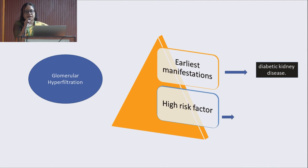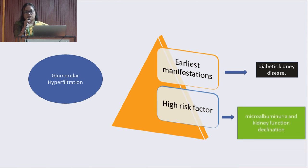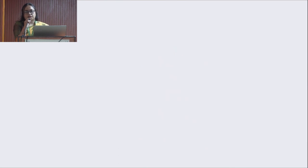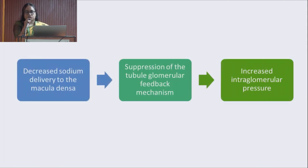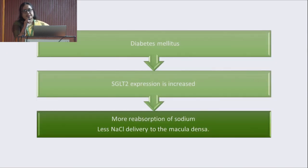SGLT2 inhibitors are now a novel drug and have been recommended as a first-line anti-diabetic agent by diabetic associations worldwide. During studies on diabetic and non-diabetic cases, they showed primary and secondary outcomes. The primary outcome was diabetic control along with beneficial effects — including decreases in heart failure mortality and renal failure mortality.